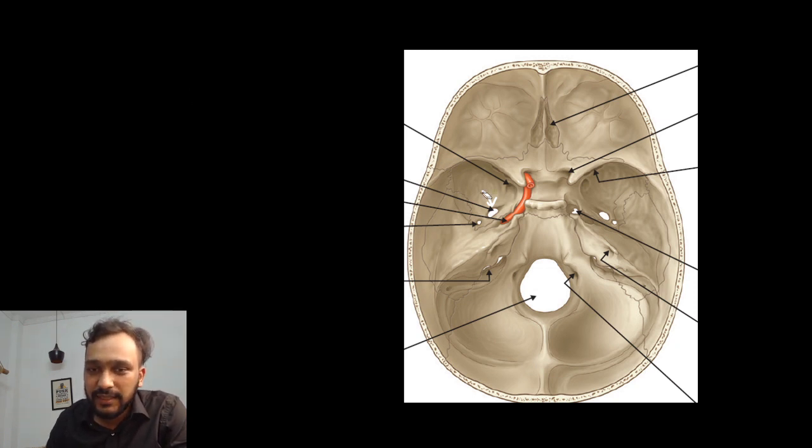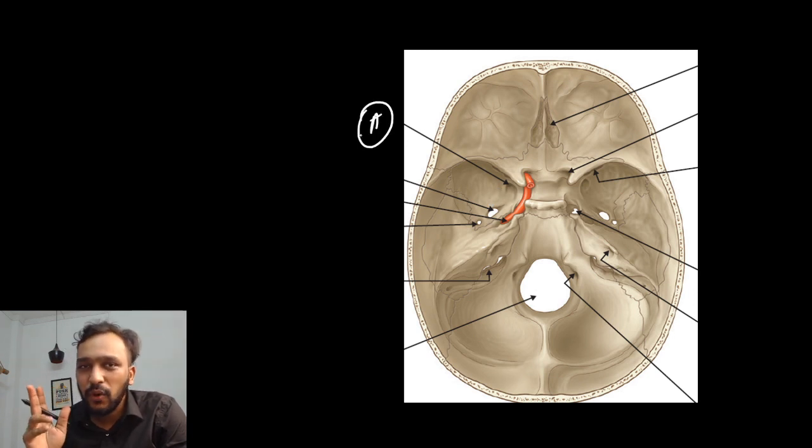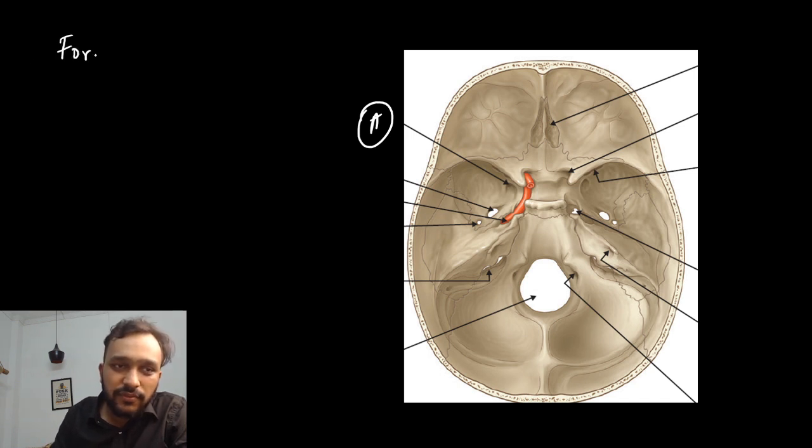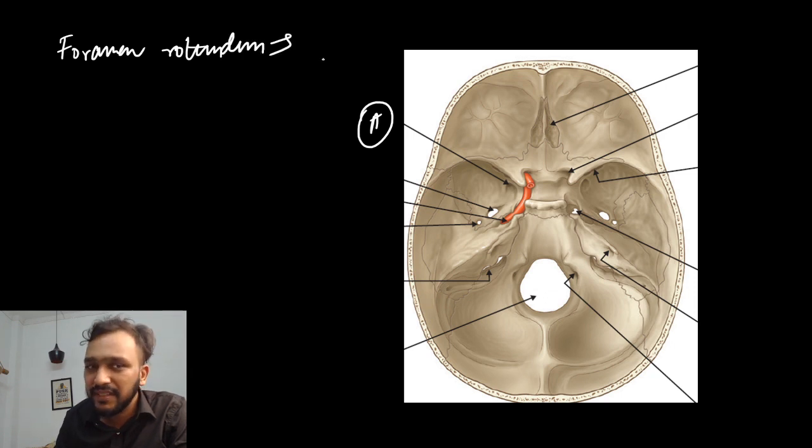Beginning with the first foramen labeled as A, just pause the video and think what this foramen is. So guys, this foramen is foramen rotundum. The structure passing through the foramen rotundum is your maxillary nerve.